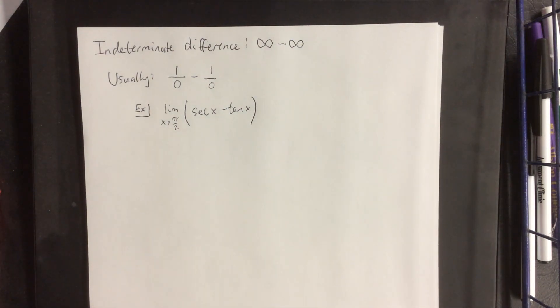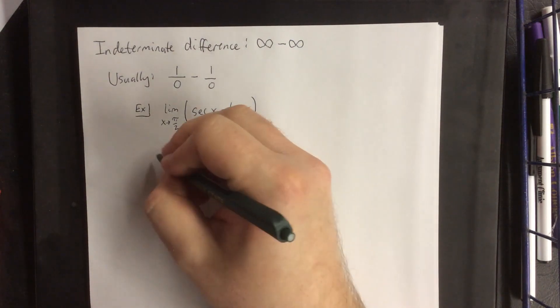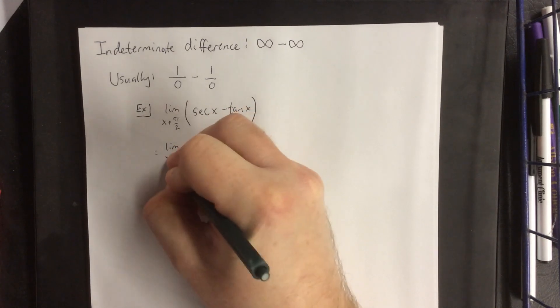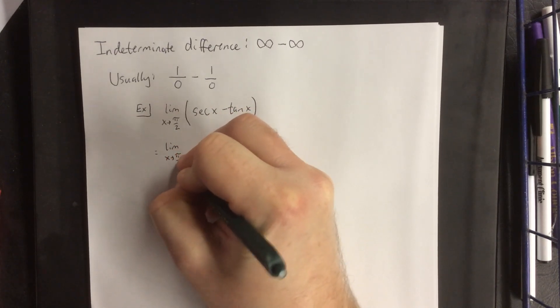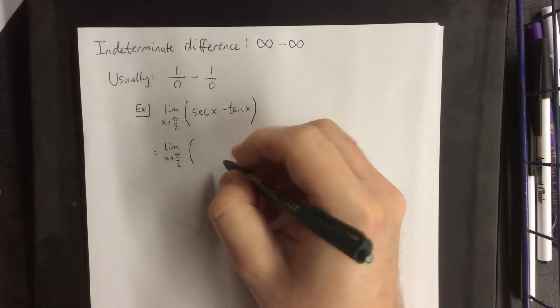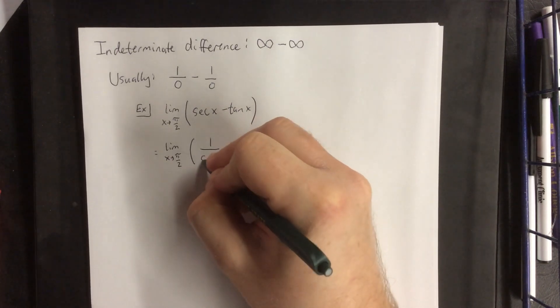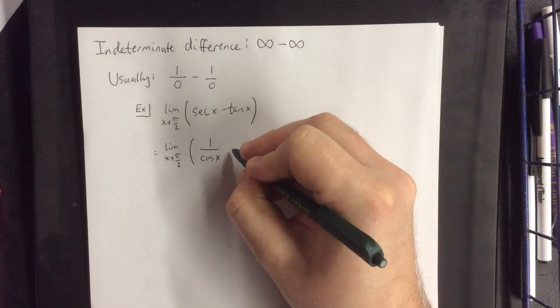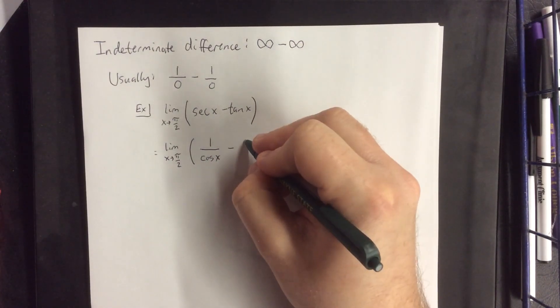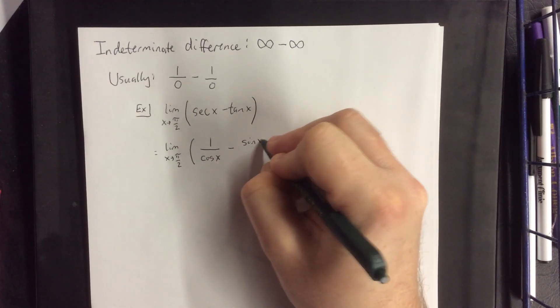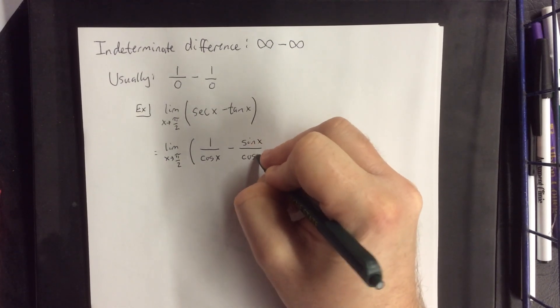Now, the reason I'm pointing this out is because we have a couple of identities that we can use for these trig functions. The secant of x, if we apply the reciprocal identity, would be 1 over the cosine of x, and the tangent would be referred to as the sine of x over the cosine of x.